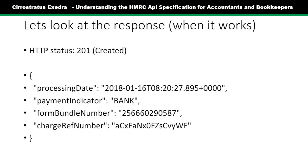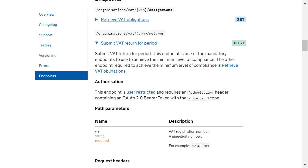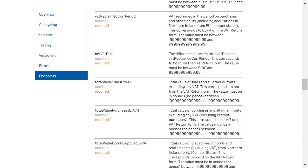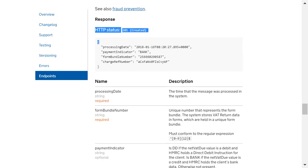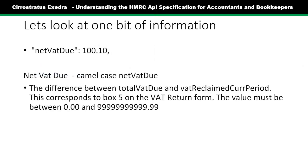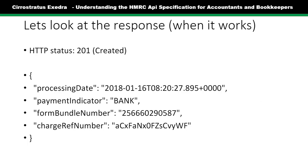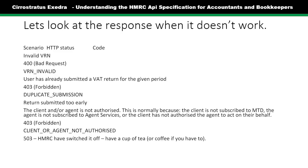Then we can look at what comes back — a response code. Any response code that starts with the number two is a successful code, so it's 201 for a created response. You can see this in the specification. Within this, it indicates whether or not there's a direct debit — if you look at the payment indicator, it indicates if it's a direct debit or whatever. That's useful information and isn't necessarily provided by the MTD software itself.